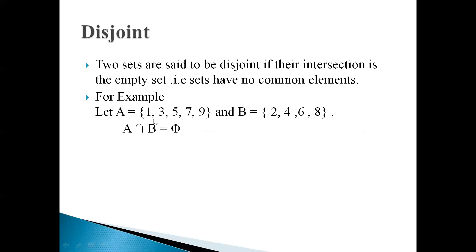For example, in set A, all elements are odd numbers and in set B, all elements are even numbers. And if we have taken the intersection of A and B, then its result is null.